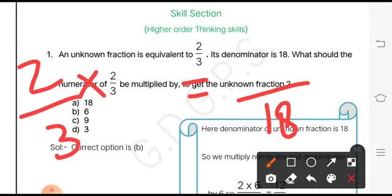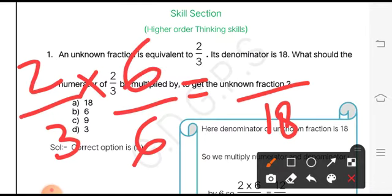We know that we obtain the equivalent fraction either by multiplying or by dividing. Here we get 18 when we multiply something to 3. We know that we multiply 6 to 3 because 3 times 6 is 18. That means 6 is to be multiplied to 3, but we also know that the same number is to be multiplied to the numerator as well. That means 6 should be multiplied to the numerator also to get the unknown fraction.